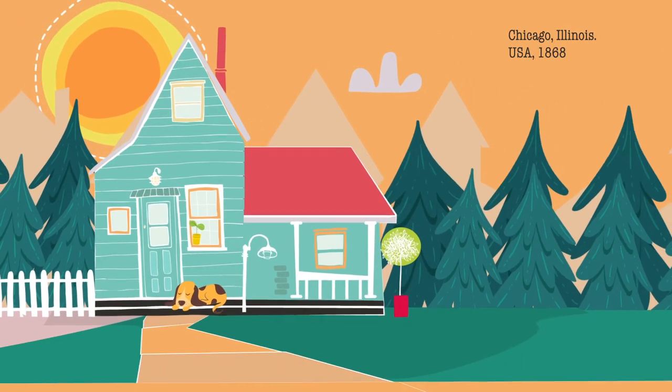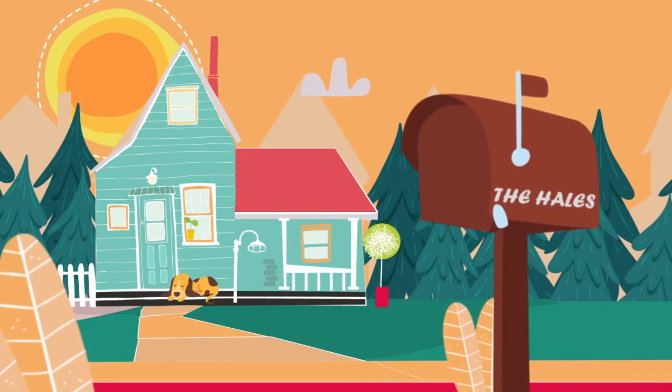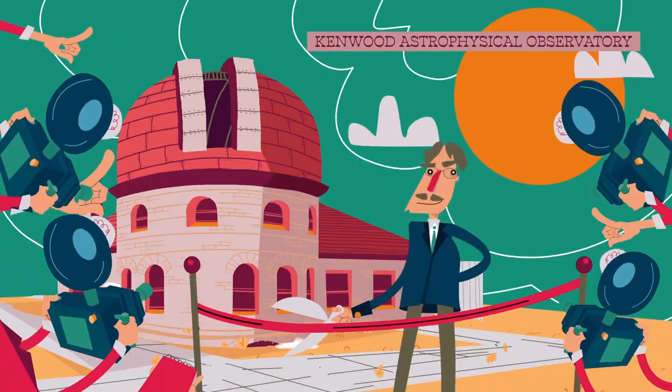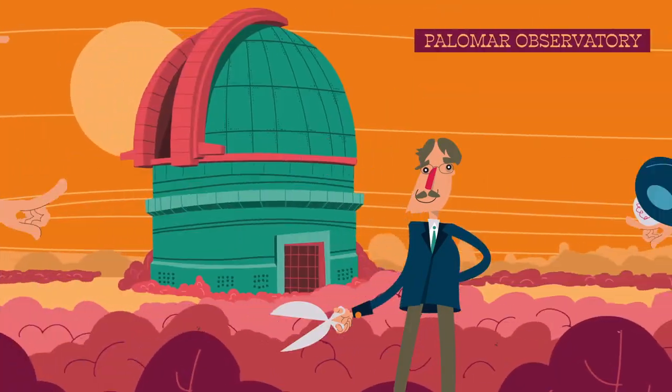In 1868, in Chicago, George Ellery Hale was born. He was an astronomer who would revolutionize our understanding of sunspots. Hale designed and built several large telescopes in the United States.